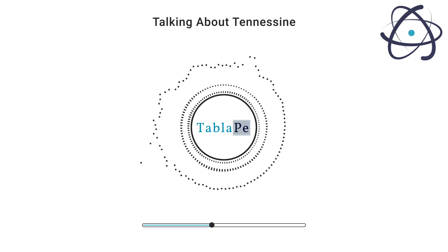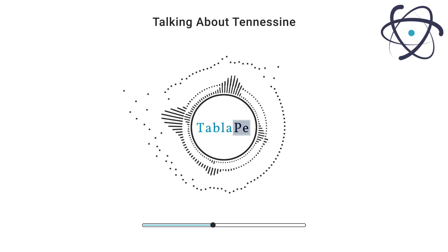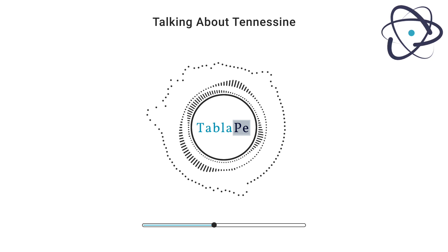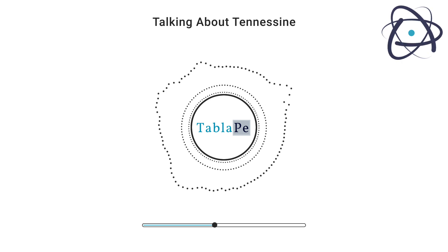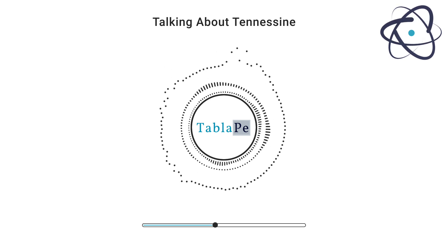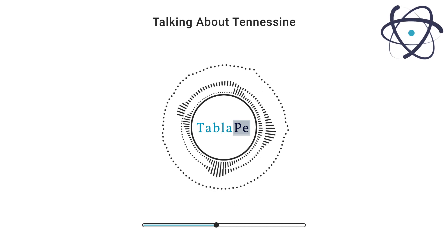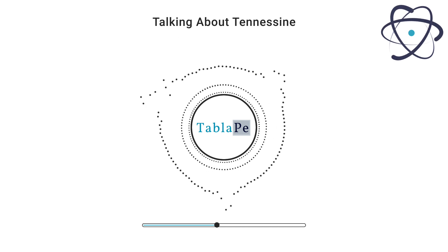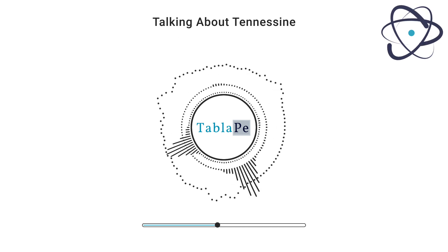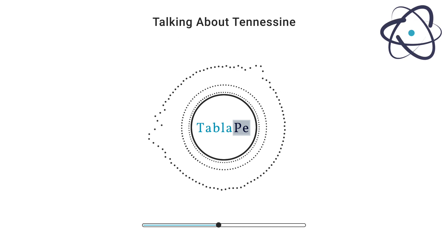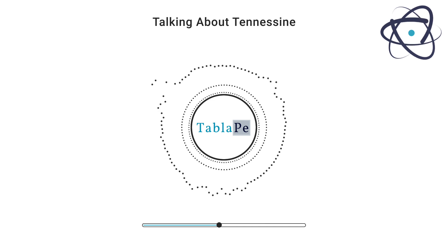The production of Tennessine is a complex and challenging endeavor due to its extreme instability. Despite its fleeting existence and apparent lack of practical applications, Tennessine holds immense scientific significance.